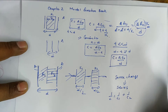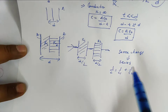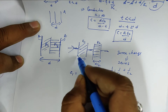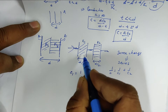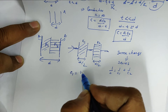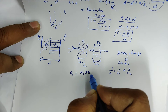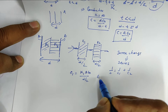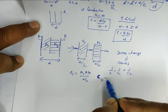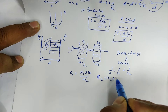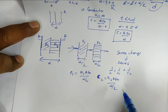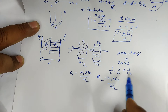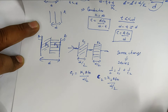If A is the area and D is the total distance, then C1 = K1·A·ε₀ / (D/2), and C2 = K2·A·ε₀ / (D/2). We substitute these values into the series formula 1/C = 1/C1 + 1/C2 to find the total capacitance.